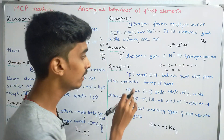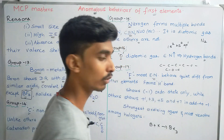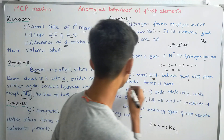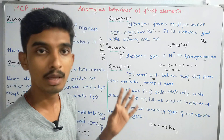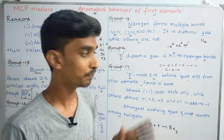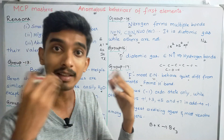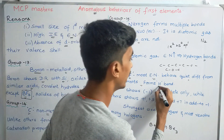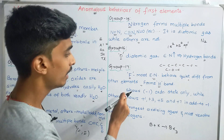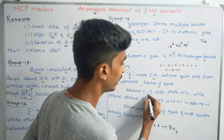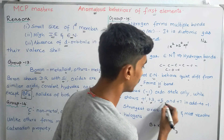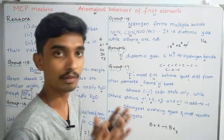Next, Group 17. The first element is Fluorine. Fluorine is the most electronegative element, which is why it behaves quite differently from Chlorine, Bromine, and Iodine. Fluorine forms hydrogen bonds. Fluorine shows only a −1 oxidation state, while other halogens show +1, +3, +5, and +7 oxidation states in addition to −1.